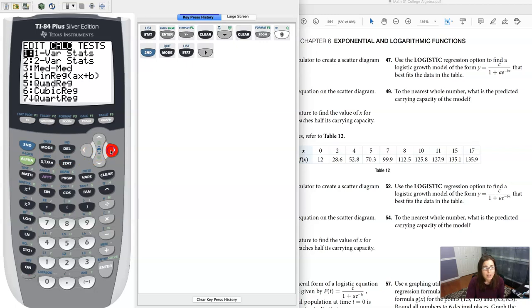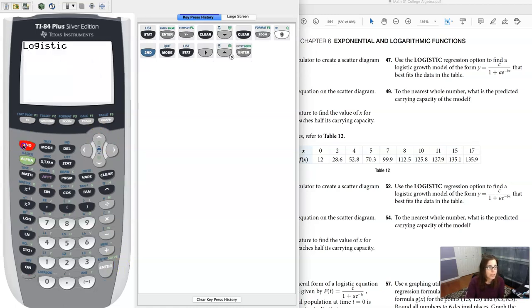So I'm going to hit stat, calc, and the logistic model is so far down at the bottom. It's option B. It's actually easier just to scroll up. Okay, and then we feed it L1, L2, and Y1.